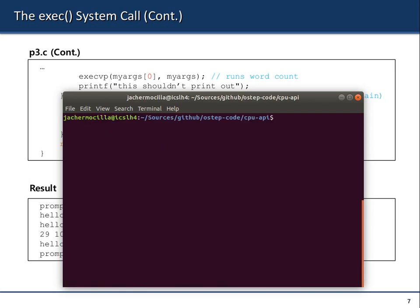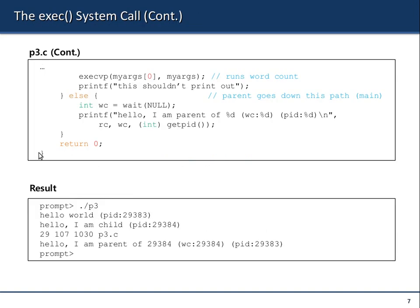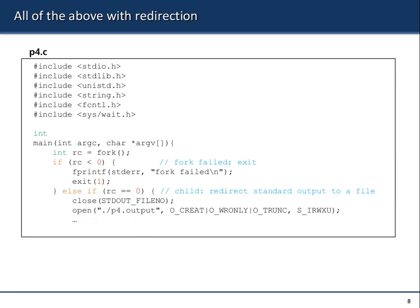The next question is: why do we have this mechanism? Why make things supposedly difficult — why not directly create a process instead of forking? It's because of the idea of redirection, and most shells take advantage of this mechanism.